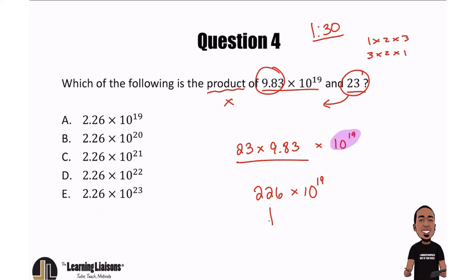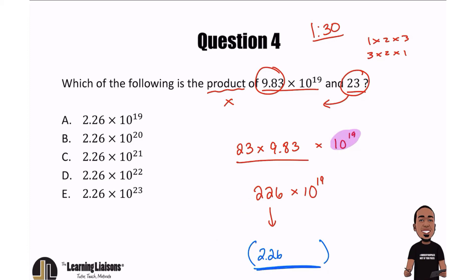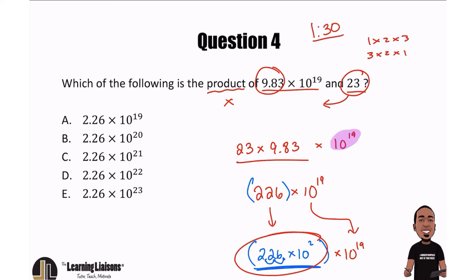We need to turn 226 into 2.26. In blue, I'll rewrite it as 2.26. To turn 2.26 back into 226, I'd multiply by 10 twice — that's 10 to the power of 2. So 226 and 2.26 times 10 squared are the same thing. Grab your calculator and verify: 2.26 times 10² equals 226. I'm just writing it in a different form to express this in scientific notation, which is the goal.